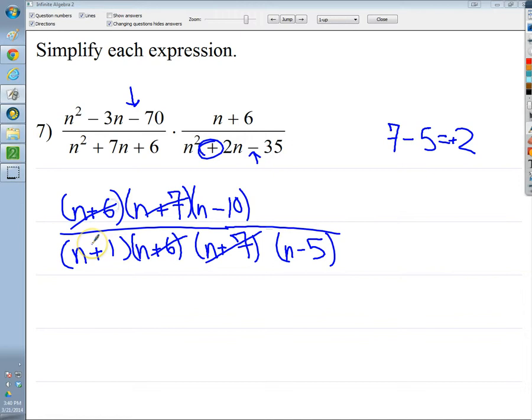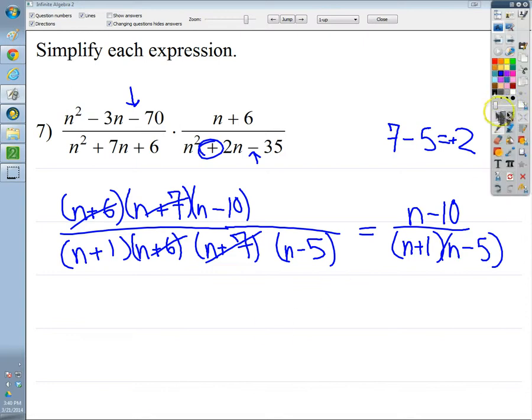Here, here, and I'm left with n minus 10 on top, or the numerator. And n plus 1, n minus 5 on the bottom. So I think that should be set up correctly. I'll just check, and then we're done. Yep.